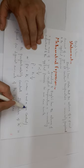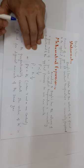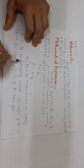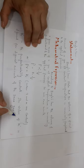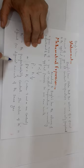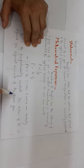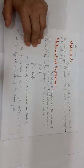So PV = K, when temperature and n are constant. K is the proportionality constant, and the value of K is different for different amounts of the same gas.